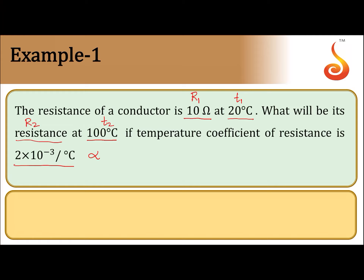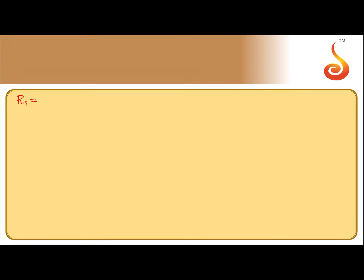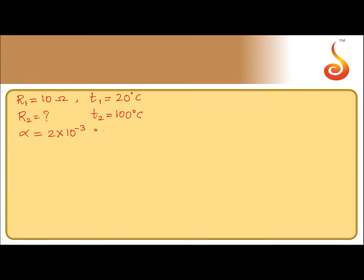We need to find resistance at 100 degree Celsius. R1 is equal to 10 ohm at temperature T1 equal to 20 degree Celsius. We need to find R2; T2 is given as 100 degree Celsius. Alpha, the temperature coefficient of resistance, is given as 2 into 10 to the power minus 3 per degree Celsius.